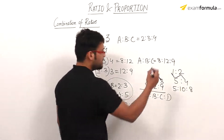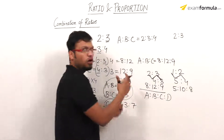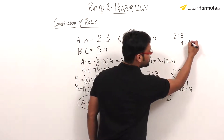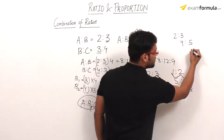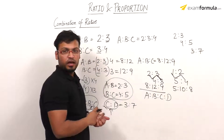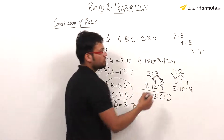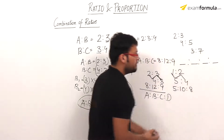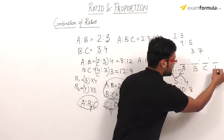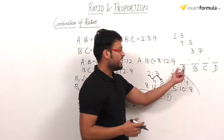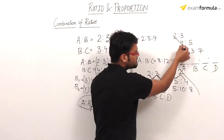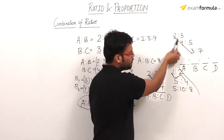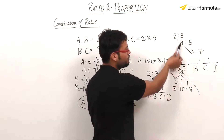Let me show the trick for this case. The numbers given are 2 ratio 3, 4 ratio 5, and 3 ratio 7. I write them in a slanted way with gaps. For A ratio B ratio C ratio D, I multiply all the numerators or antecedents together: 2 times 4 times 3 equals 24 — that is the value of A. For D, I multiply all denominators: 3 times 5 times 7 equals 105.